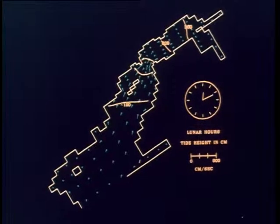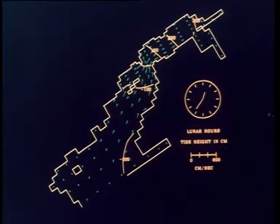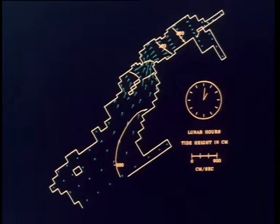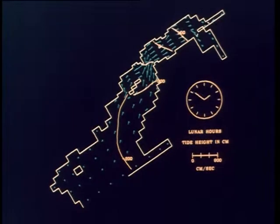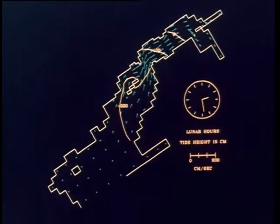The next three cycles show contours of equal tide height in centimeters superimposed on current vectors. The length of each vector is proportional to the speed of the current, and it points in the direction of the current.